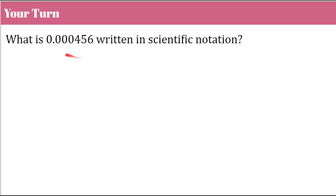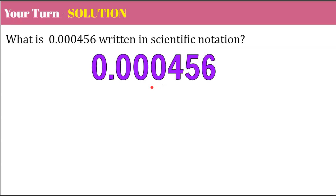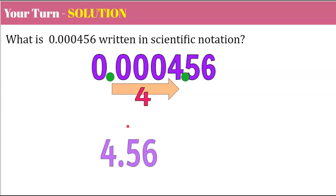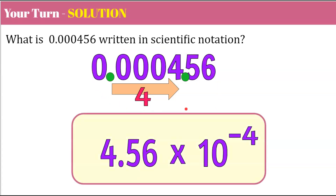Your turn again. What is 0.000456 written in scientific notation? Pause and come back when ready. Welcome back. Identify the decimal point and move it so there is one significant digit to the left — that goes right between the 4 and the 5, moving four places. So 4.56 is our factor, multiplied by a power of 10 with an exponent of negative 4, because this value is less than 1.